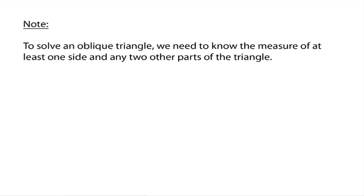To solve an oblique triangle — meaning we're looking for all six parts of the triangle — we want to find what all three angles are and what all three sides are. To solve an oblique triangle, we need to know the measure of at least one side and any two other parts. So we need at least one side, and then two angles and another side, or two other sides.